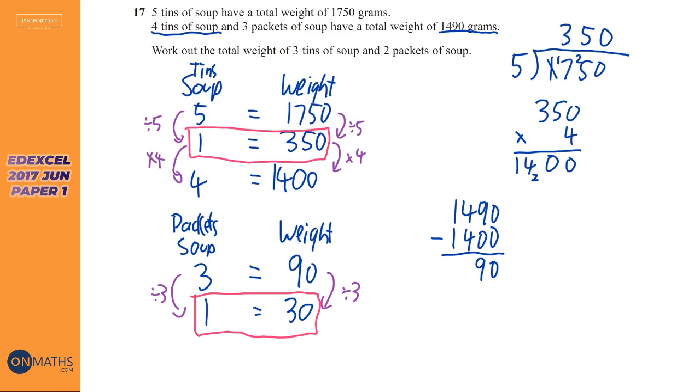That's good. So we need three tins of soup. So we need to do 350 times three. So 0, 15, 9, 10. So that'd be 1,050. So that's three tins. Try and show the examiner roughly what working out is doing what.